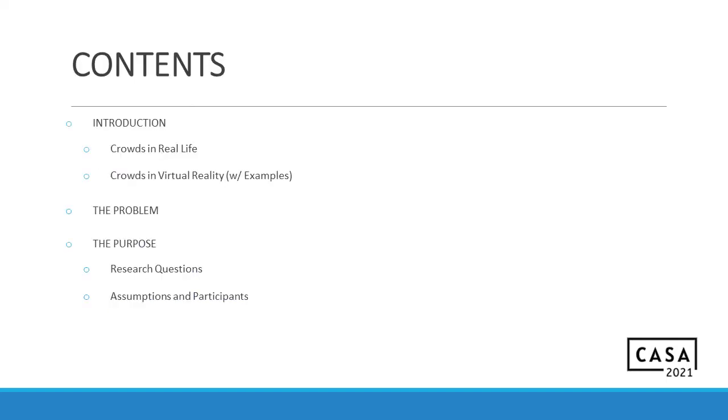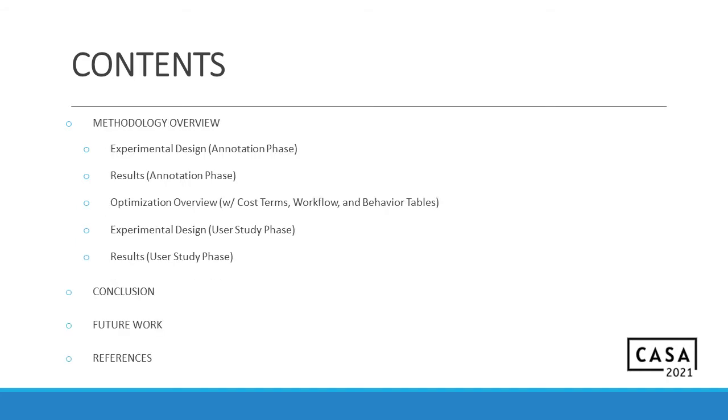First of all, here are the contents for the presentation that we'll be going through. Introduction, Crowds in Real Life, Crowds in Virtual Reality. We find a link between both of those. We discuss the problem and the purpose, and then we state our research question. Also, a little bit of information about our participants. Then we move on to the methodology review. We have our experimental design, results from that annotation phase and the optimization overview, experimental design of the user study phase, and the results.